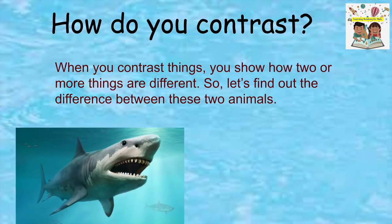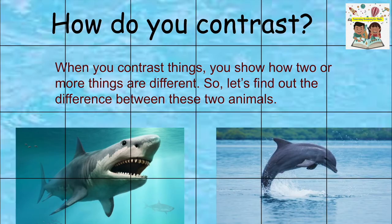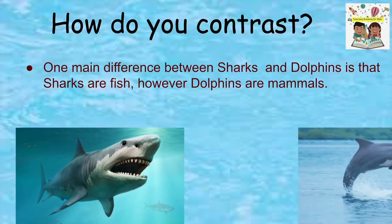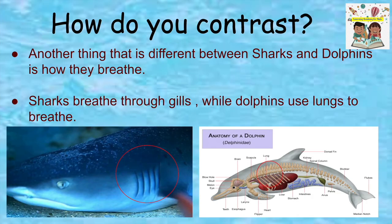How do you contrast? When you contrast things, you show how two or more things are different. So let's find out the difference between these two animals. One main difference between sharks and dolphins is that sharks are fish. However, dolphins are mammals. Another thing that is different between sharks and dolphins is how they breathe. Sharks breathe through gills, while dolphins use lungs to breathe.